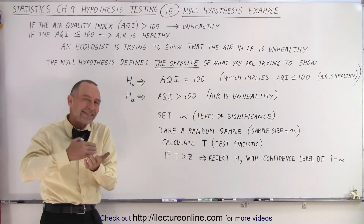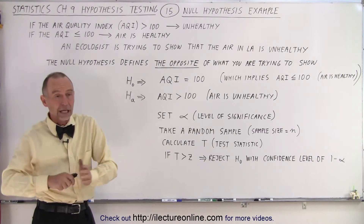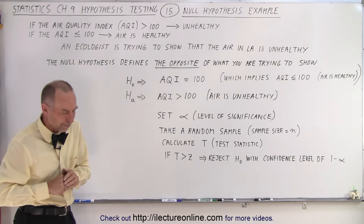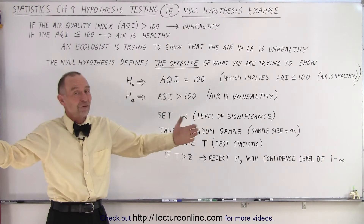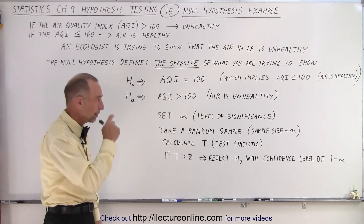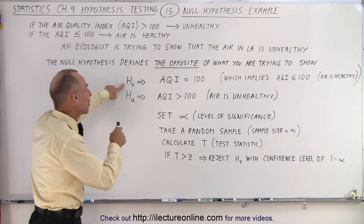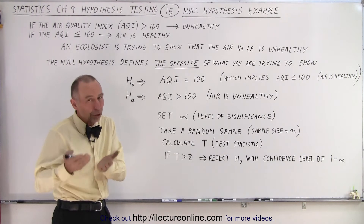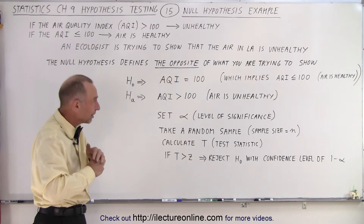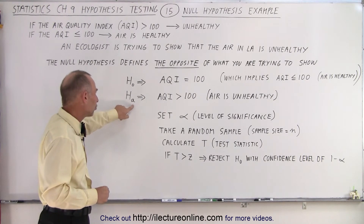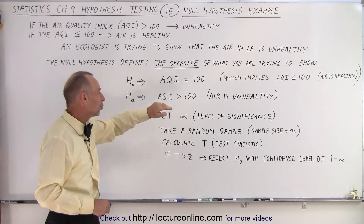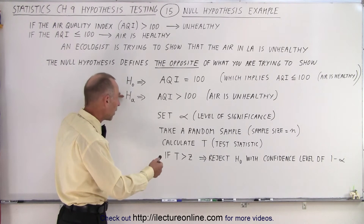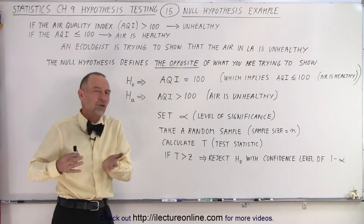Again, the null hypothesis is the opposite of what you're trying to show, and you're trying to reject that hypothesis to show that you're correct — that the air is unhealthy as you suspect. If you fail to reject the null hypothesis, then you fail to prove what you're trying to prove. The alternate hypothesis, H sub A, is that the AQI is greater than 100. So if we reject the null hypothesis, the alternate hypothesis becomes correct, meaning the air is unhealthy — which is what the ecologist is trying to show.